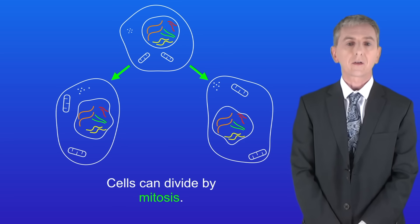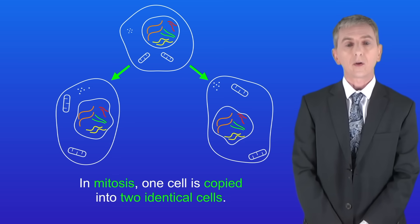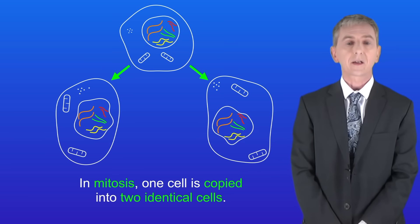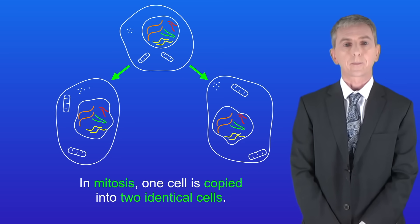We saw that cells can divide by mitosis. In mitosis one cell is copied into two identical cells, and I'm showing you that here.